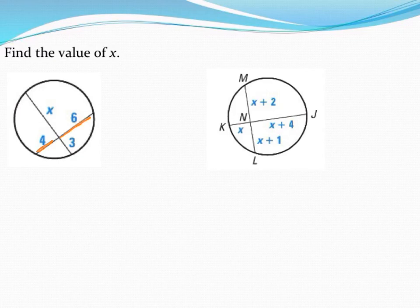So, for example, this chord is cut up into the pieces 4 and 6. Their product, 4 times 6, is going to be equal to the product of the other two pieces multiplied together.